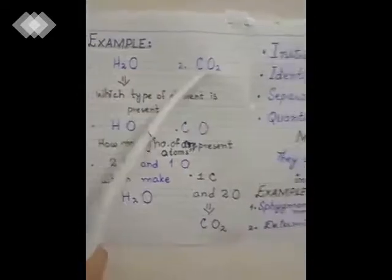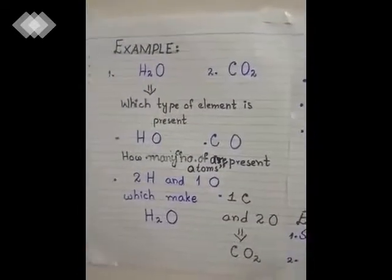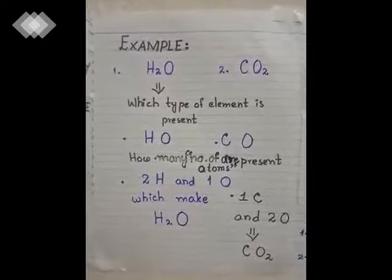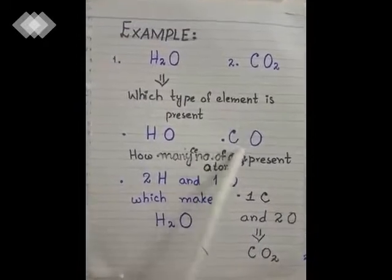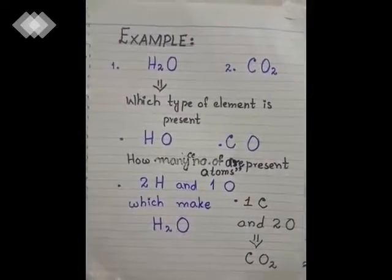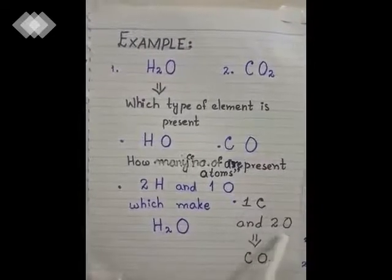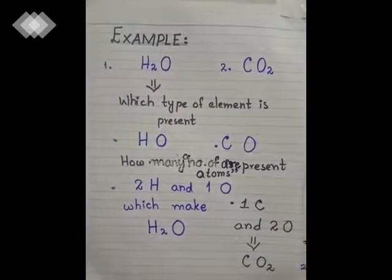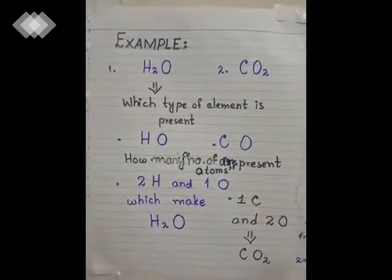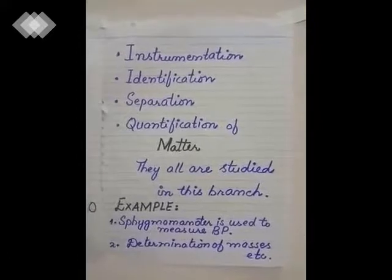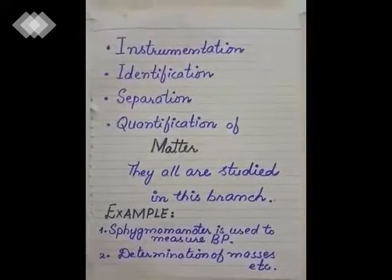The next example is carbon dioxide. Carbon dioxide is made up of carbon and oxygen — identifying which type of elements are present is qualitative analysis. One atom of carbon and two atoms of oxygen are present making CO₂ — that is quantitative analysis because it shows the number of atoms. In analytical chemistry we also study instrumentation, identification, separation, and quantification of matter.